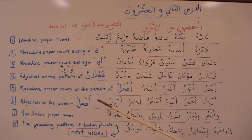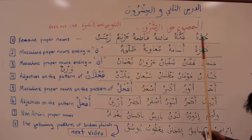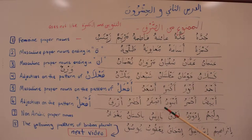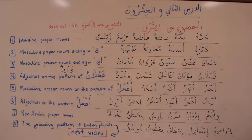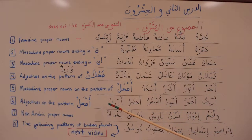Number six: adjectives on the pattern of أفعل. For example, أبيض (white), أحمر (red), أسود (black), أصفر (yellow), أخضر (green), أزرق (blue). It's not that every color is ممنوع من الصرف — rather, if an adjective is on this wazn, it is ممنوع من الصرف. It so happens that all these colors follow this pattern, but there are other non-color words on this pattern that are also ممنوع من الصرف, and there are colors that are not.